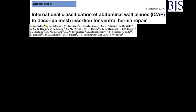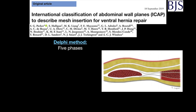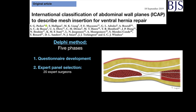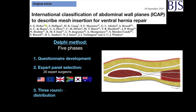Last year, the International Classification of Abdominal Wall Planes, ICAP, was published in the British Journal of Surgery to describe mesh insertion for ventral hernia repair. The aim was to achieve consensus by enlisting internationally recognised academic abdominal wall reconstruction surgeons and employing Delphi methodology to establish an international classification. The process consists of five phases: questionnaire development, expert panel selection — 20 international abdominal wall surgeons were selected — and three rounds of questionnaire distribution.